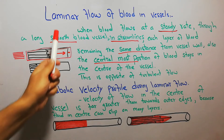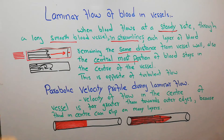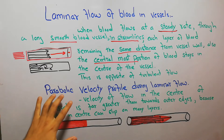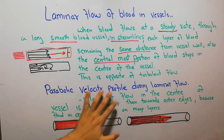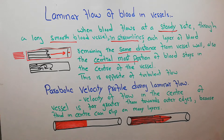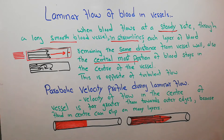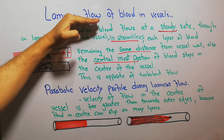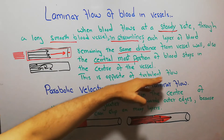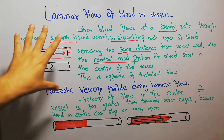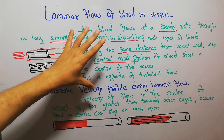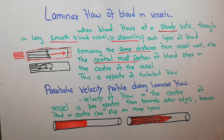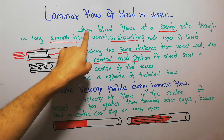Today we are going to discuss the laminar flow of blood in vessels and the parabolic velocity profile during laminar flow. There are two basic types of blood flow: laminar flow and turbulent flow. In this topic we are going to discuss laminar flow and its basic characteristics.